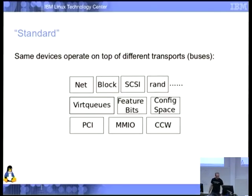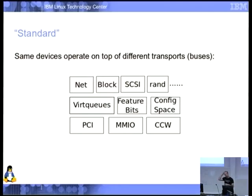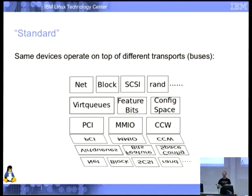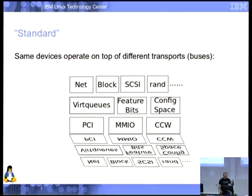Standard also means the same devices operate on top of different transports. Net, block, SCSI, console, balloon device — all use the same VirtIO infrastructure: the virtqueues, feature bits, a standard config space. You use that on whatever bus you're on. We tend to talk about this from the point of view of the driver author, since more people will write drivers than hypervisors. But of course this structure is mirrored on the other side — the hypervisor will also have its PCI bus implementation, virtqueues implementation, network device and block device from the other side.